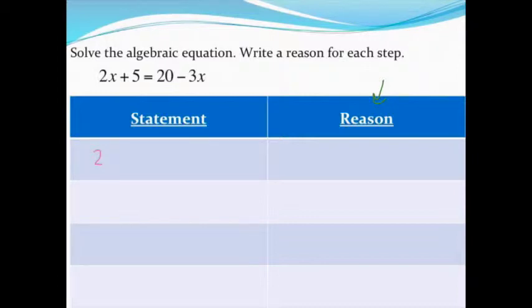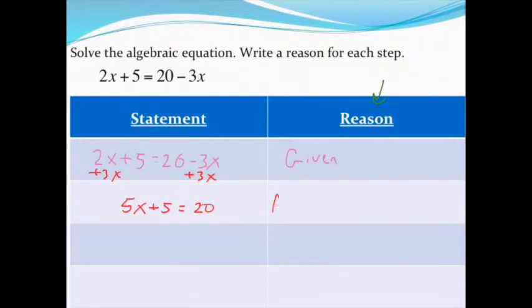Always start with your original statement. So I'm going to say 2x + 5 = 20 - 3x, and the reason that I know that's true is because it was given to me. The next thing I'll do is add 3x to both sides to get 5x + 5 = 20. Because I used addition, I'm going to call my reason for this the addition property.